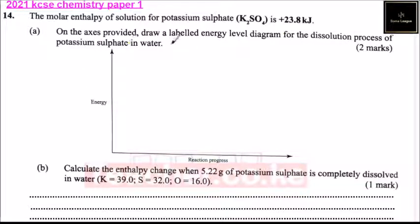On the axis provided, draw a labeled energy level diagram for the dissolution process of potassium sulfate in water. Since we have been given the molar energy, which is positive 23.8, we start here and we draw the energy level there.